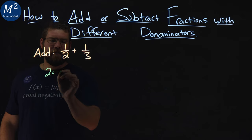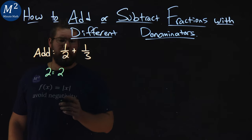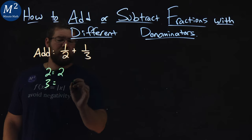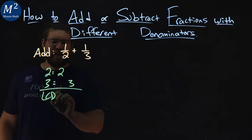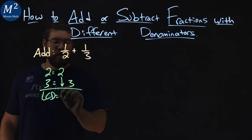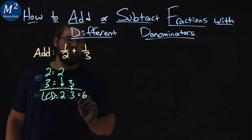So 2 breaks down to be just 2 multiplied by itself. 3 breaks down to be 3 multiplied by itself. So the LCD of the two numbers is 2 times 3, which is 6. Not too bad.